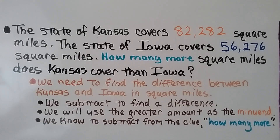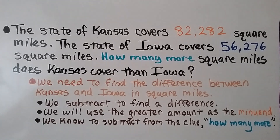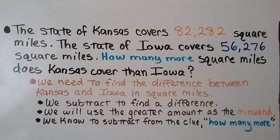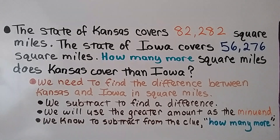The state of Kansas covers 82,282 square miles. The state of Iowa covers 56,276 square miles. How many more square miles does Kansas cover than Iowa? We need to find the difference between Kansas and Iowa in square miles. We subtract to find a difference, and we will use the greater amount as the minuend. We know to subtract from the clue 'how many more.'